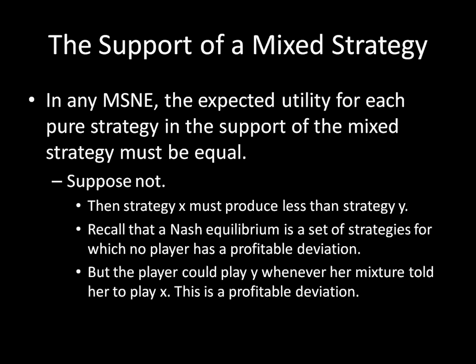A Nash equilibrium is a set of strategies for which no player has a profitable deviation. But this is a problem: if I'm supposed to play strategy X some of the time but I get something worse than if I played Y instead, I could just replace every instance of X with Y. If I was rolling a die and playing X on one and two and Y on three, four, five, or six, I'd instead just play Y all the time — a profitable deviation. That contradiction means it's not a Nash equilibrium, proving the claim.